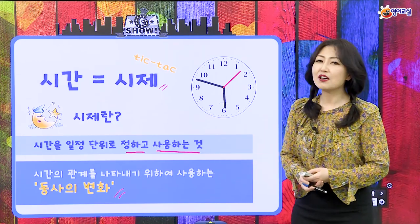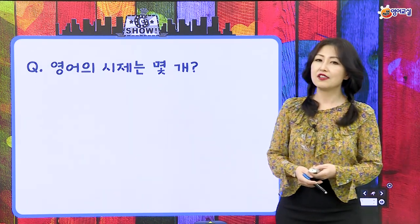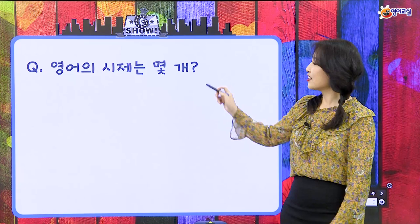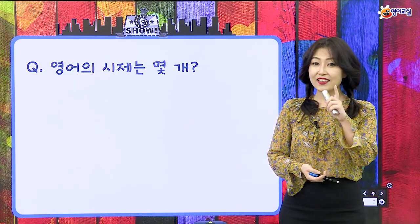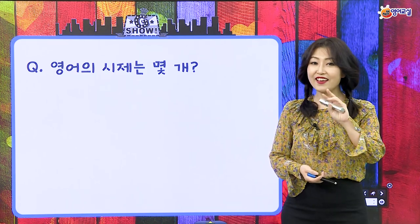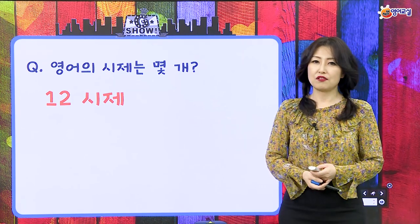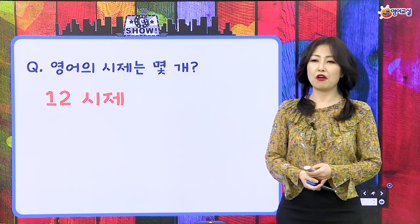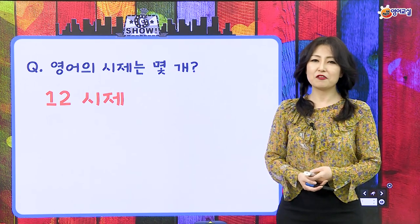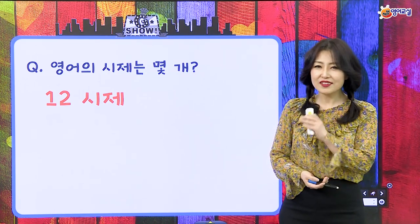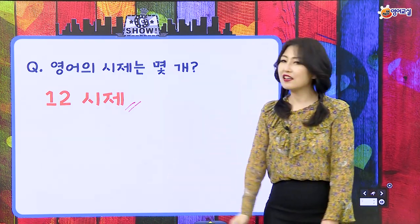동사로 우리가 시간을 표현한다라고 했었고, 영어의 시제가 몇 개일까요? 두 개? 세 개? 네 개? 다섯 개? 영어의 시제는 열두 시제라고 했어요. 선생님 되게 많아요. 왜 이렇게 영어는 시제가 많아요? 선생님도 영어를 만든 사람한테 물어보고 싶었어요. 영어의 시제는 열두 시제예요.